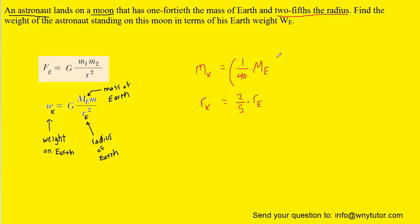With these adjustments, we're going to be able to plug into our weight equation. This time we'll say the weight on the moon rather than the weight on Earth. Rather than plugging in the mass of the Earth, we're going to plug in the mass of this moon, which we just said was 1/40 times mE. This is the mass of the moon.